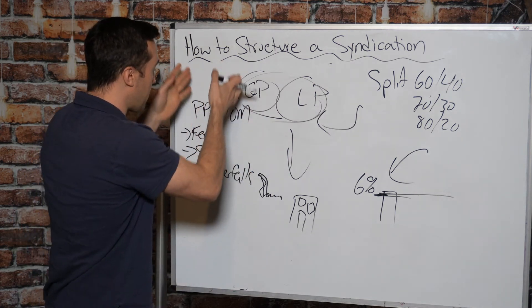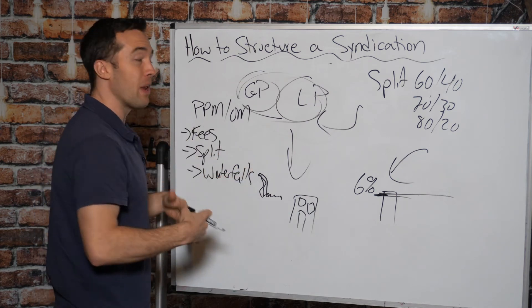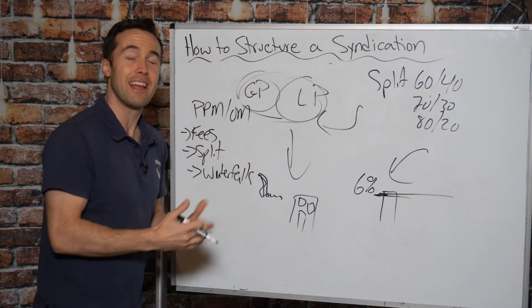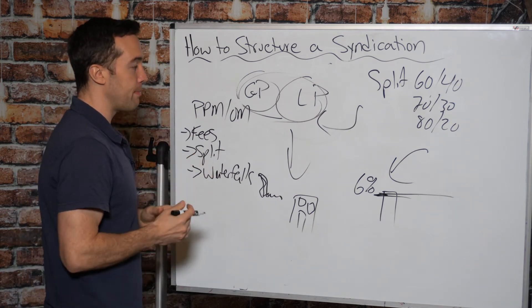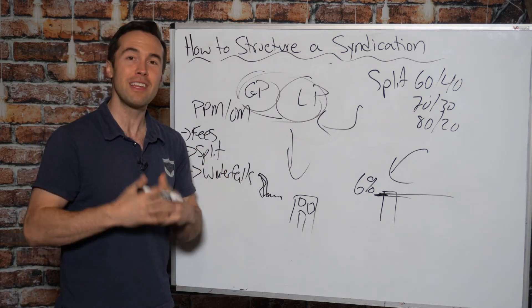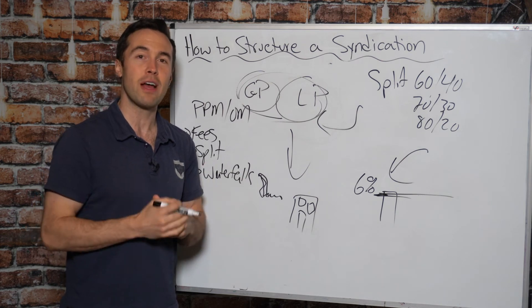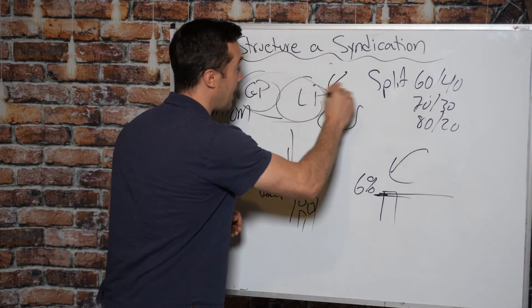you know, the investors will not want that general partnership to eat away at their returns until the deal gets turned around. So once you've got your PPM, your OM, you've laid everything out, and if an investor is interested in investing in your deal, you have something called a subscription agreement.